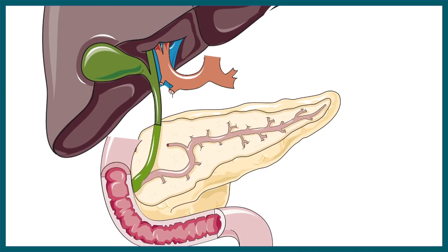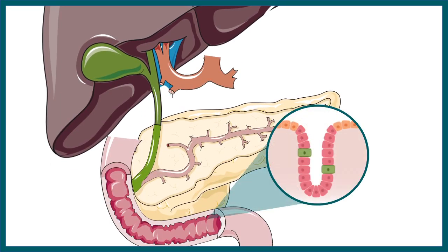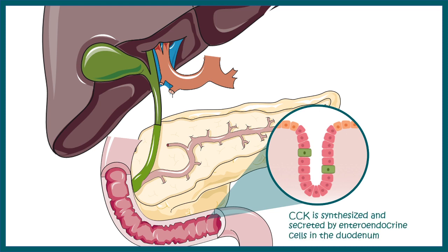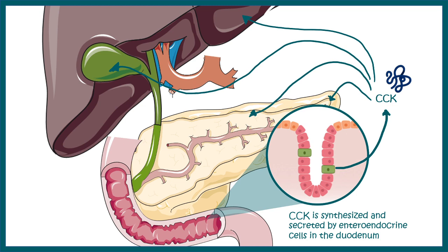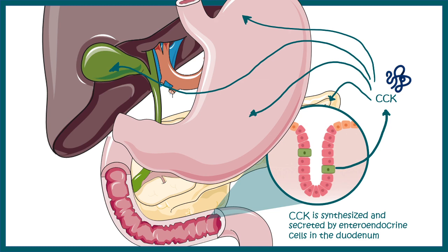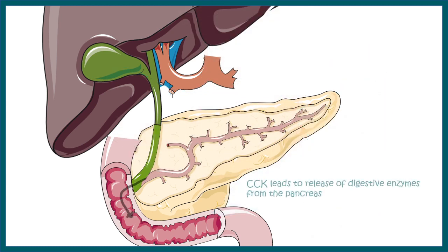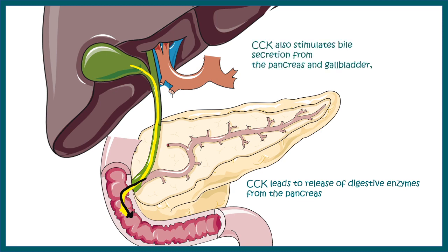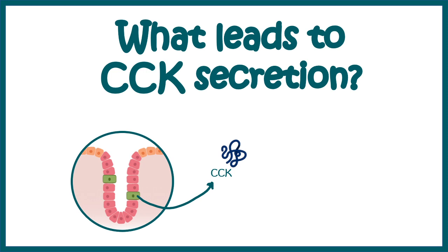Cholecystokinin is secreted from the enteroendocrine cells of the duodenum and some portion of the jejunum. CCK is a peptide hormone that acts primarily on pancreatic acinar cells, and also on the liver, gallbladder, and stomach — each with a distinct effect. CCK leads to release of digestive enzymes from the pancreas and secretion of bile from the gallbladder — these are its two major functions.